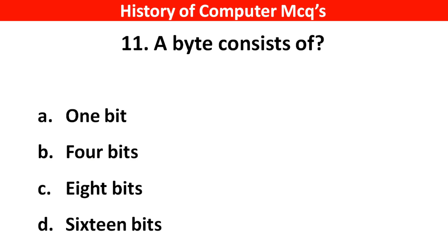Next question. A byte consists of — Options A: 1 bit, B: 4 bits, C: 8 bits, D: 16 bits. Right answer is option C, 8 bits.